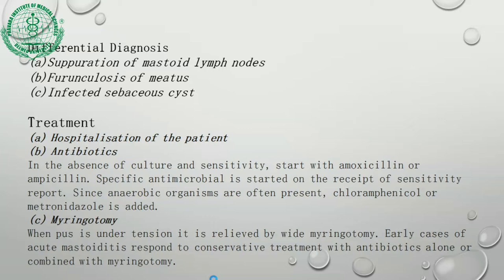Differential diagnosis of acute mastoiditis includes inflammation of mastoid lymph nodes, perichondritis of the auricle, and infected sebaceous cyst. The pinna is forwardly displaced in both mastoiditis and perichondritis, but tragal tenderness is mostly present in perichondritis. Mastoid tenderness can be checked by the three-finger test: place fingers on the root of the zygoma, mastoid tip, and middle of the mastoid process. Tragal tenderness is mostly seen in perichondritis.